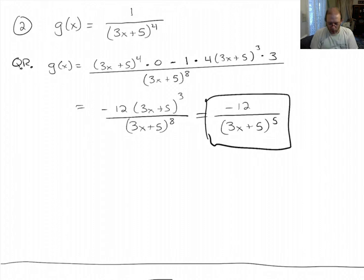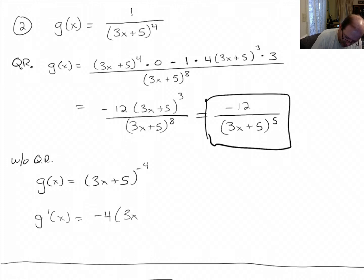Now that's one way to do it with the quotient rule. You can also do this without the quotient rule. What you can do is just rewrite g of x as (3x + 5) to the negative 4. And then when you use the chain rule on it.